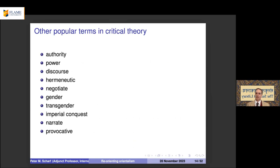To be considered sophisticated, scholars must use terms like hermeneutics, negotiation of understanding, gender, transgenderism, imperial conquest, narrative, and 'provocative.' Without this vocabulary, one is not hired, not invited for lectures — essentially banished from the scholarly community.